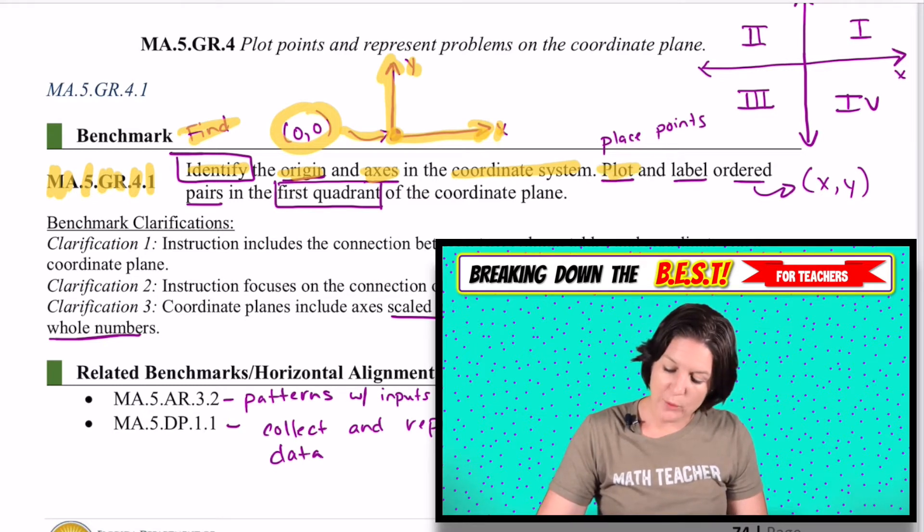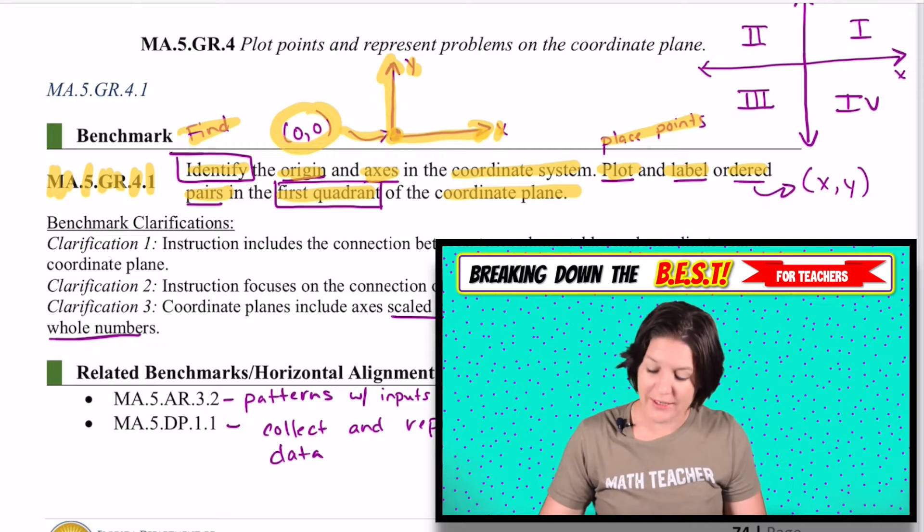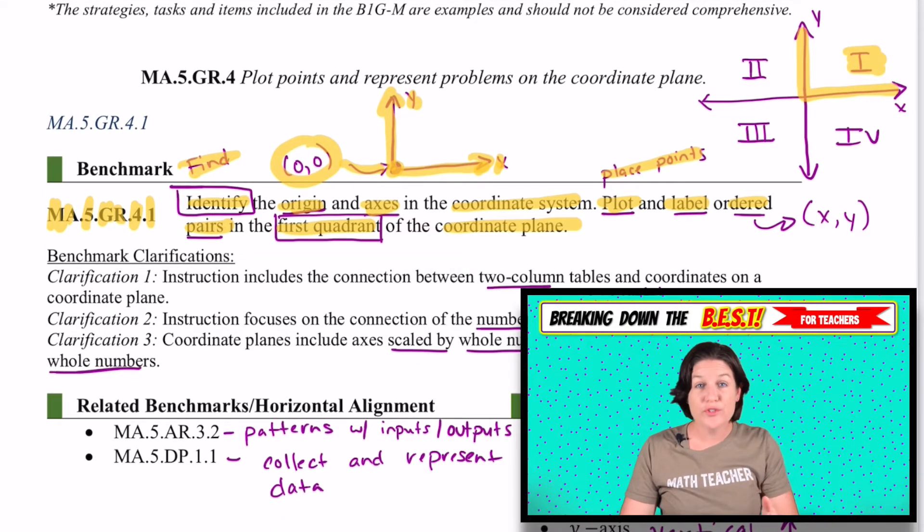Then it says to plot or place the points and label the ordered pairs in the first quadrant of the coordinate plane. So we're focusing right here on this quadrant, quadrant number one. Quadrants two, three, and four are quadrants that they will definitely learn about in middle school and high school.